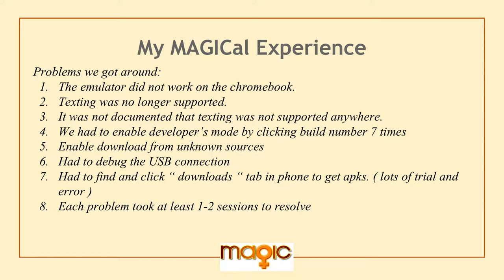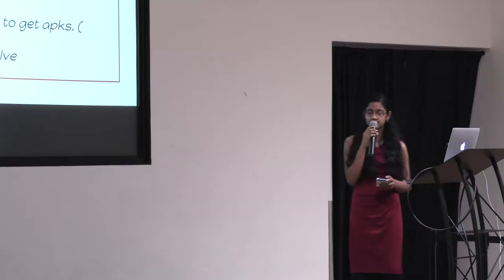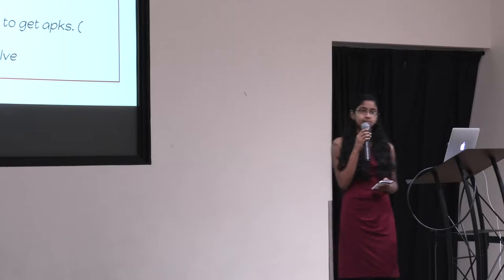Many of our problems, as I said before, were not documented, leaving us ourselves to figure out how to get around these problems. We got around the texting issue by using the sharing component found on MIT App Inventor. Then we could not download our APKs onto our devices, so first we had to enable developer mode by clicking the build number seven times — don't you think that's rather odd? We also enabled download from unknown sources and debugged the USB connection, but still couldn't figure out why our APKs were in downloads. Finally, after many trials and errors, we found there's a downloads tab on Android devices where you can download APKs onto the phone. Each problem took at least one to two sessions to resolve.